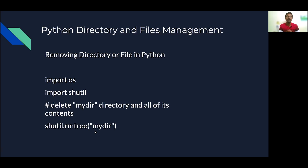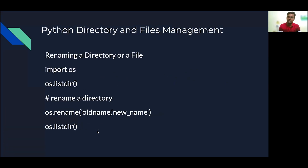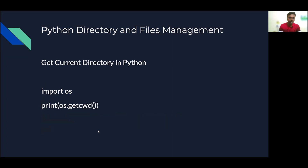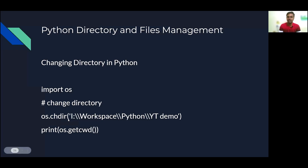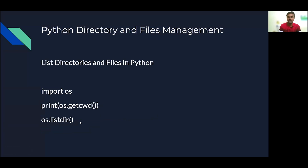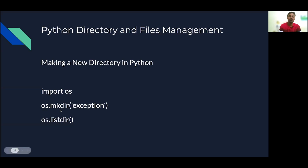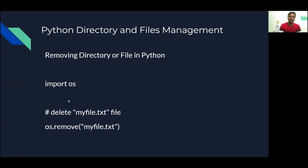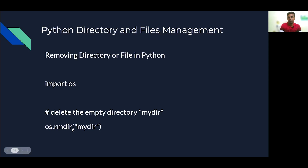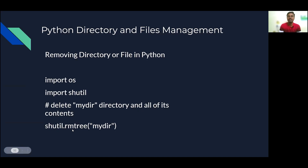These are some of the basic things you need to be aware of with the OS module: os.getcwd() to get the current working directory, os.chdir() to change directory, os.listdir() to list directory contents, os.mkdir() to create a new folder, os.rename() to rename a directory, os.remove() to remove a file, os.rmdir() to remove an empty directory folder, and deleting a folder with all its contents.